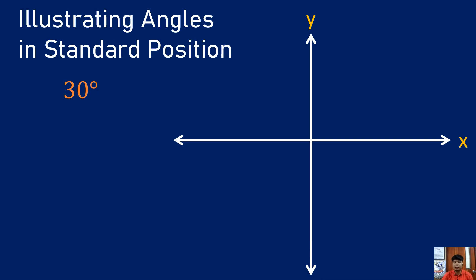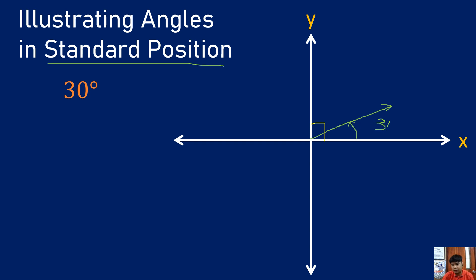Now, if you try to illustrate an angle in standard position, we start with 30 degrees. We know that is a positive angle, so the rotation must be counterclockwise. We know one complete revolution is 360 degrees, and we have four quarters of 90 degrees each. So if I create a 30 degree angle, I move counterclockwise, approximating and stopping here. I started from the positive x-axis — that is 30 degrees in standard position.